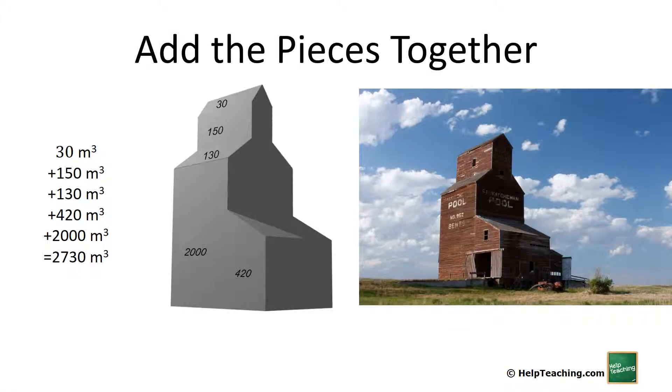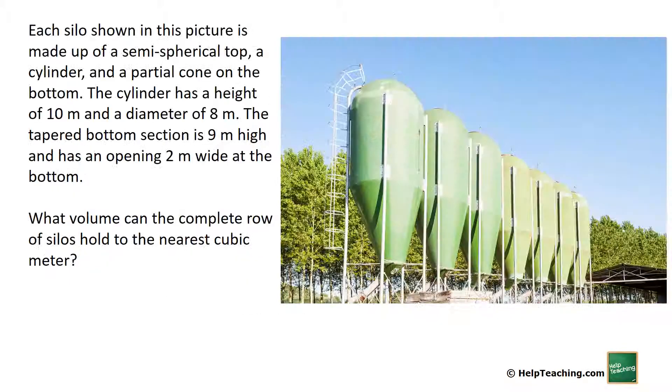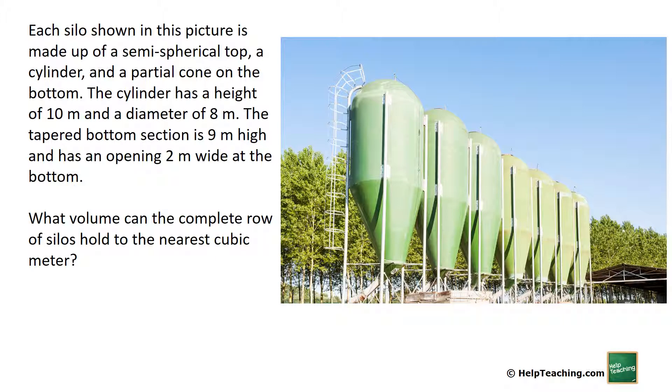Here's a different example. Each silo in this picture is made up of a semi-spherical top, a cylinder, and a partial cone on the bottom. The cylinder has a height of 10 meters and a diameter of 8 meters.